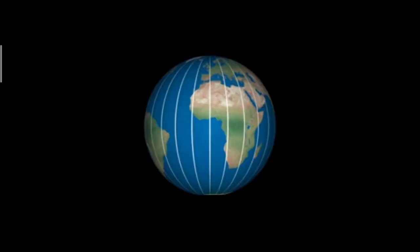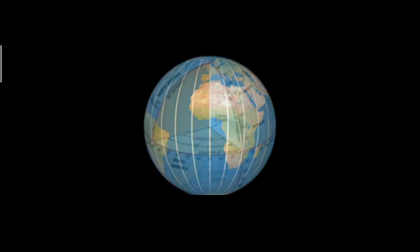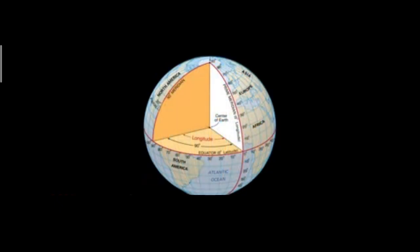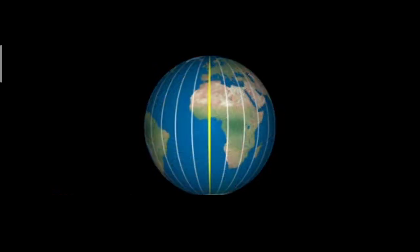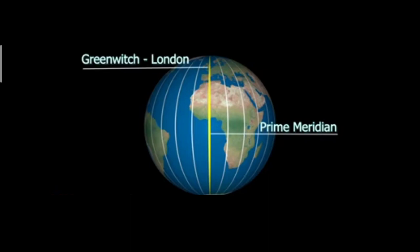Now we discuss longitudes. Longitude is the angular distance from the center of the earth towards the east and west of the prime meridian. The prime meridian is a longitude which passes through Greenwich near London, and serves as the reference line for all other longitudes.